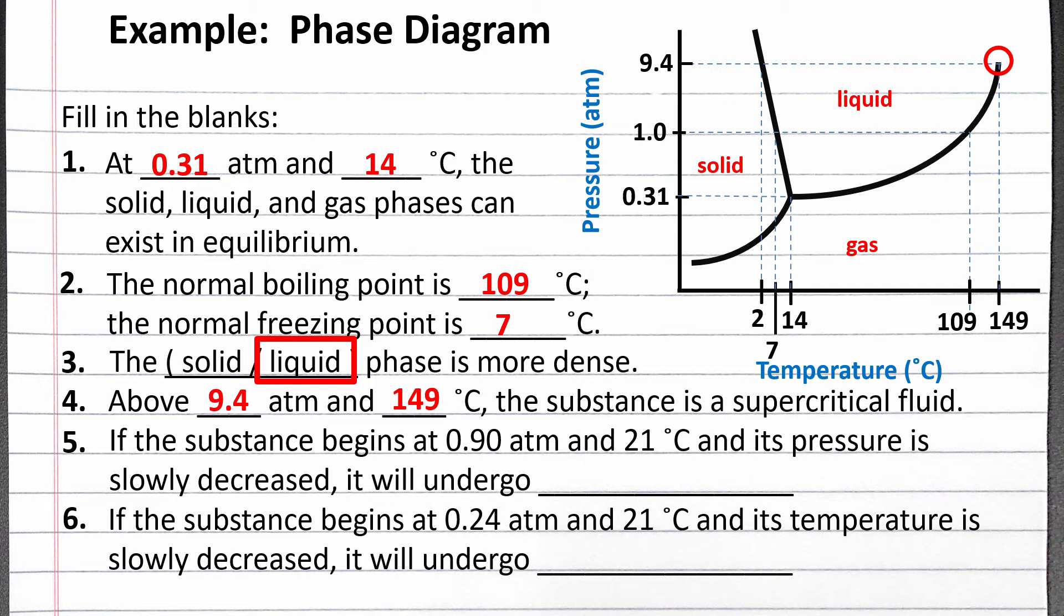For our next statement, we want to know what phase change occurs when the substance begins at 0.9 atmospheres and 21 degrees Celsius and the pressure is slowly decreased. We are passing from the liquid phase to the gas phase, which is vaporization.